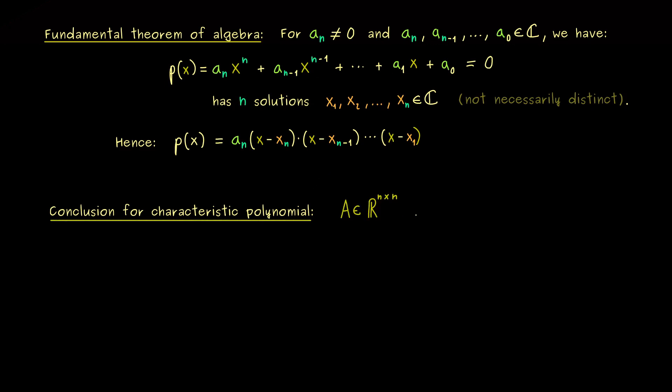Please recall for a square matrix A we define pₐ as the characteristic polynomial. So more precisely, pₐ(λ) is defined as the determinant from before. Okay, and now we can simply apply the fundamental theorem of algebra for this polynomial.